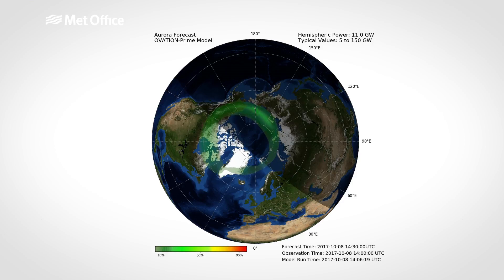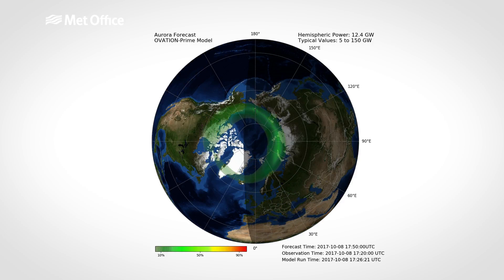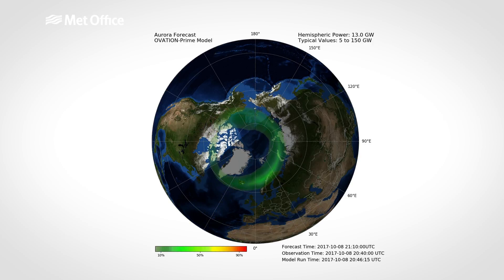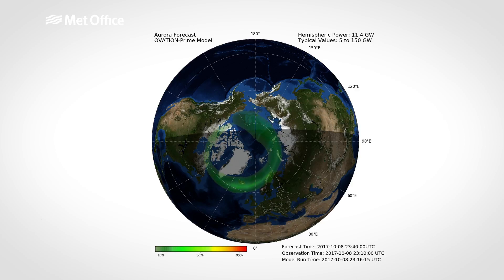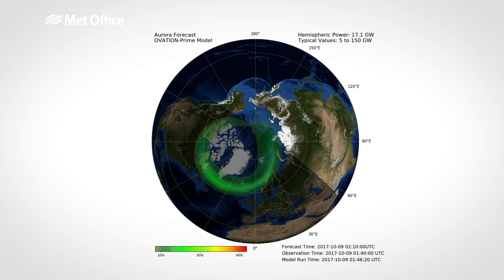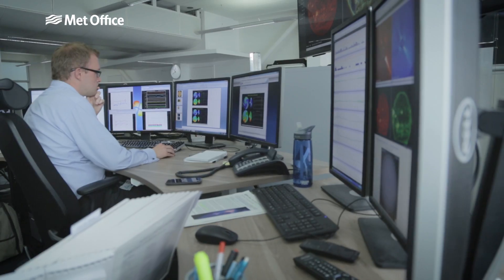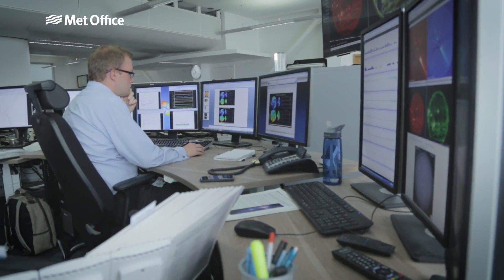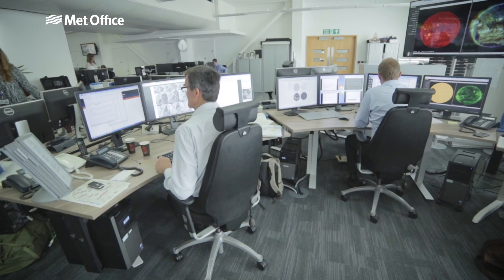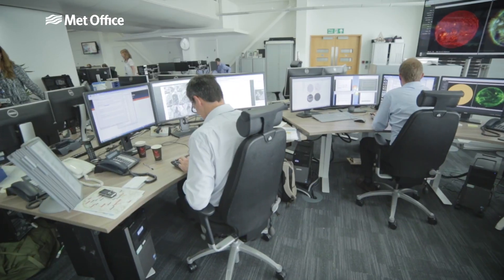Solar particles enter the Earth's atmosphere at the geomagnetic North and South Pole. The larger the events, the further towards the equator the particles will travel, causing the aurora to appear at lower latitudes.